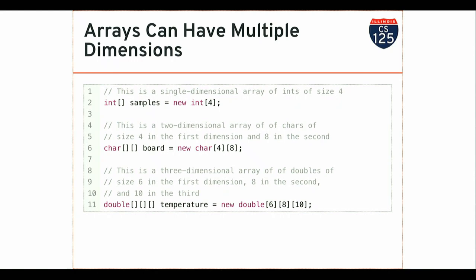When we first met arrays we talked about single-dimensional arrays — how to allocate them, initialize them, and work with them using loops. Now I can allocate arrays with multiple dimensions. To be upfront: the part of the class covering multi-dimensional arrays has been de-emphasized a little. You'll do a few homework problems this week on them, and they may come up on an MP checkpoint, but we don't have a heavy focus on this anymore.